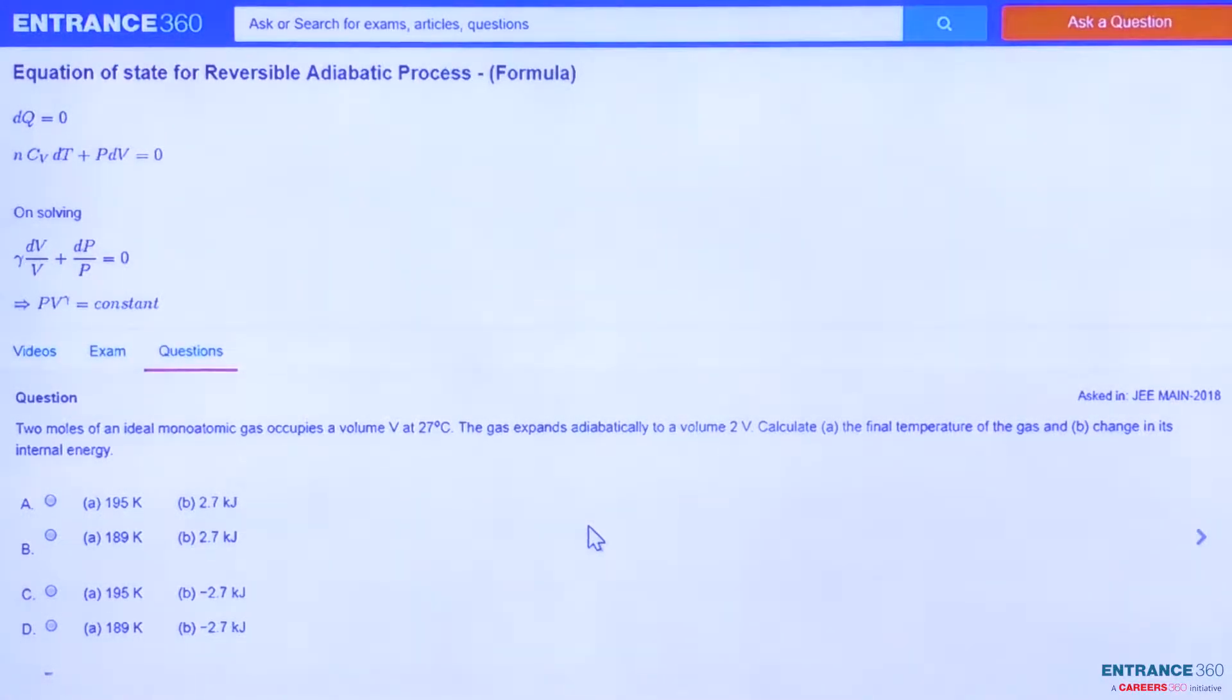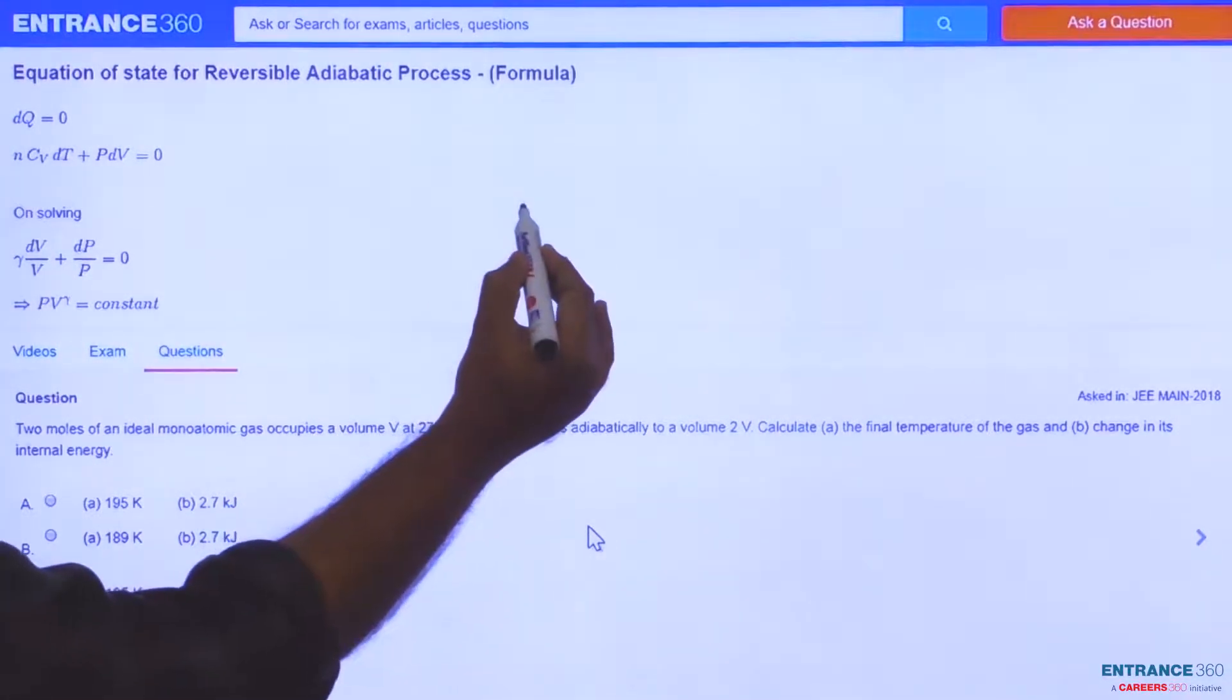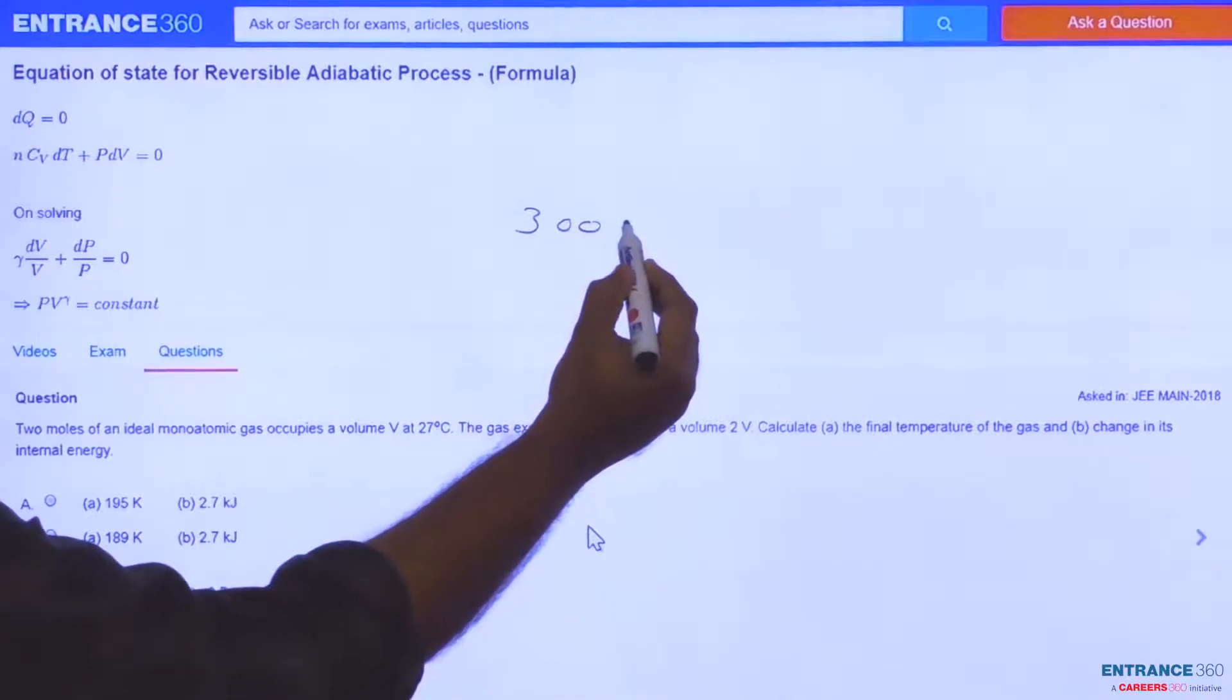Hi everyone, let's discuss a question from thermodynamics asked in JEE Main 2018. Two moles of an ideal monoatomic gas occupy a volume V at 27 degrees Celsius, which is 300 Kelvin.